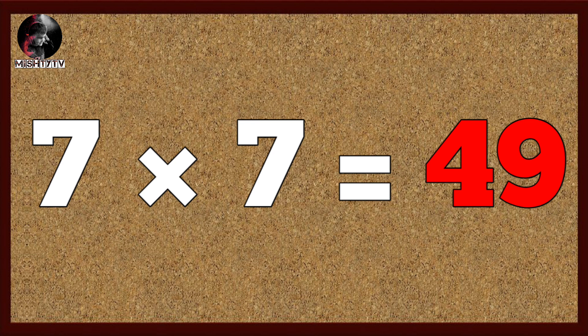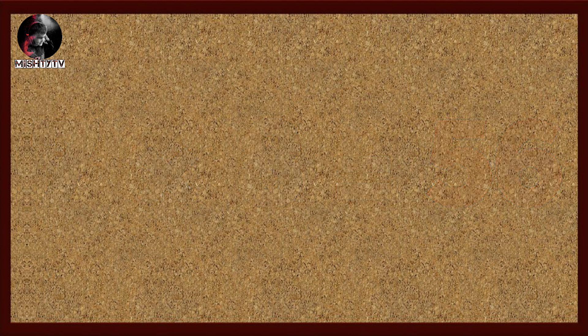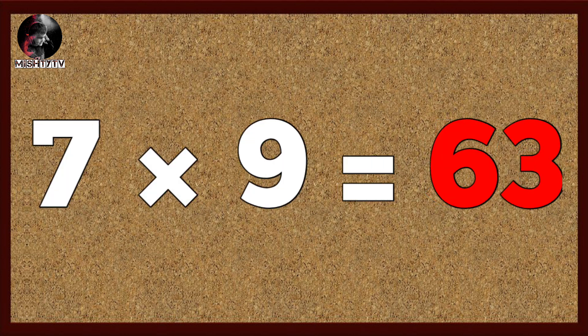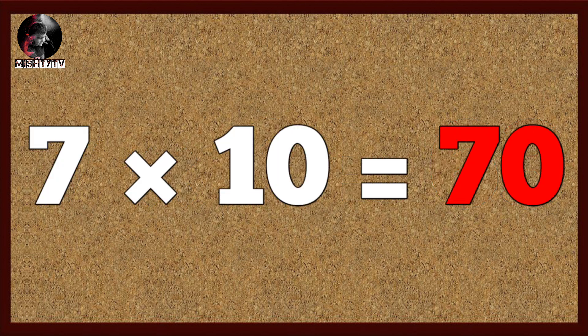Seven seven's are forty-nine, seven eight's are fifty-six, seven nine's are sixty-three, seven ten's are seventy.